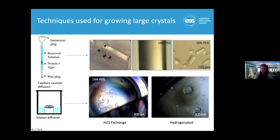To grow large crystals, we used many techniques: vapor diffusion, micro dialysis, batch, and capillary counter diffusion. We got the largest crystals in two techniques — capillary counter diffusion and vapor diffusion. In capillary counter diffusion, we could go up to 150 micrometers, and this has been improved with another membrane protein done by another student in our network. For vapor diffusion in hydrogenated conditions, we could go up to 1.2 millimeters. However, these crystals did not diffract at room temperature, which is the major requirement for neutron crystallography.